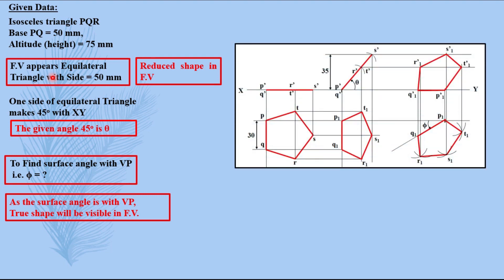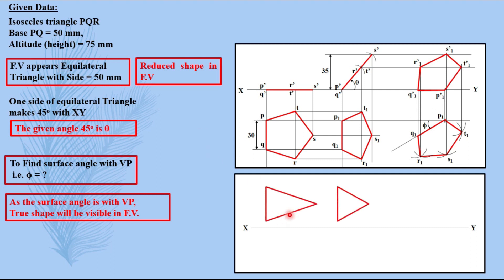Now let us look at a solution from the previous video. Here the reduced shape is in top view and beside it the true shape is also in the same view, that is top view. So if here we are getting reduced shape in front view, it means our true shape will also be in the same front view beside it.